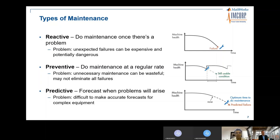However, doing predictive maintenance is not easy — forecasting when a problem will arise with equipment is a very difficult thing to do. Now we have technologies that enable predictive maintenance. Technologies such as machine learning and deep learning can help you identify when your equipment might fail in the field, and we will show how you can develop these predictive maintenance algorithms for underground cable applications.